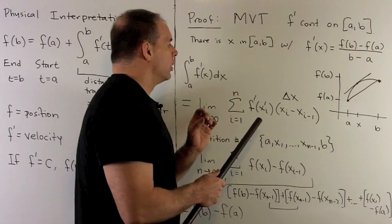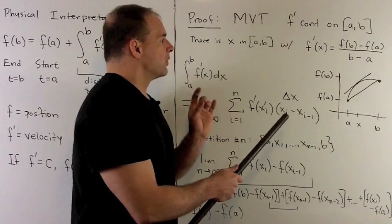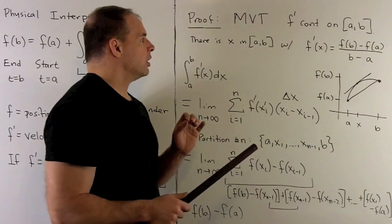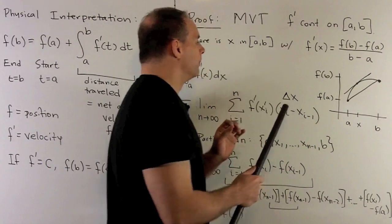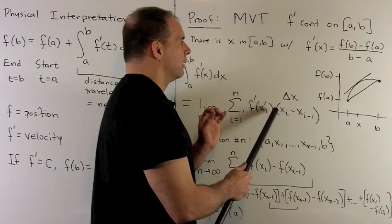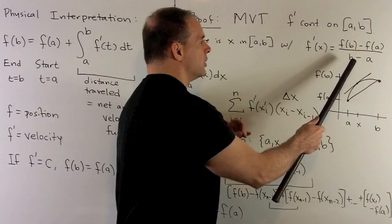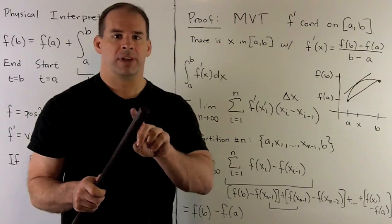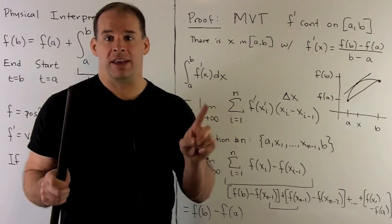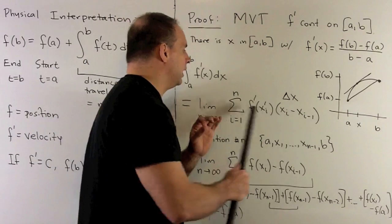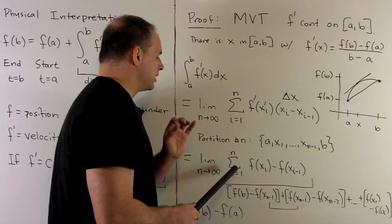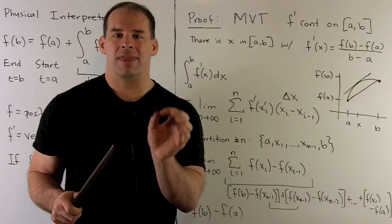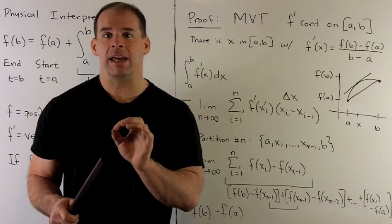The Mean Value Theorem says we can always choose some point in each interval so that f prime of x_i times (x_i − x_{i-1}) equals f(x_i) − f(x_{i-1}). So the mean value theorem lets us push the derivative times the interval length to a difference of the function at the endpoints. If we take the sum of all these differences, things telescope — all the terms in the middle disappear, and we're left with f(b) minus f(a).